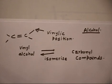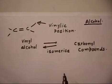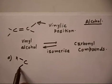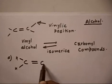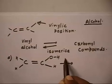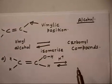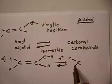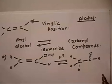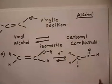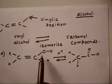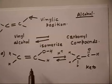We need to propose a mechanism for the following isomerization. We have CH double bond C–OH, and when treated with H+, we get a product with a carbonyl group. This is nothing but keto-enol tautomerization — on one side you have the keto form, on the other side you have the enol form.